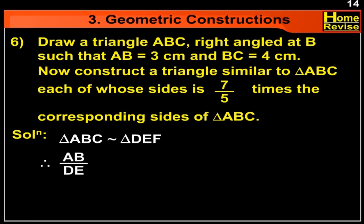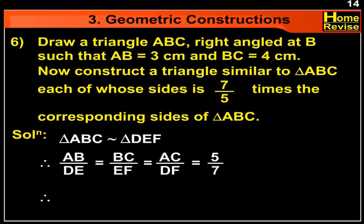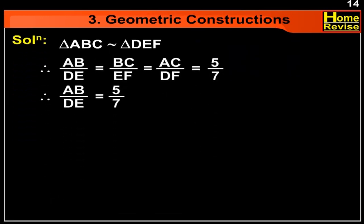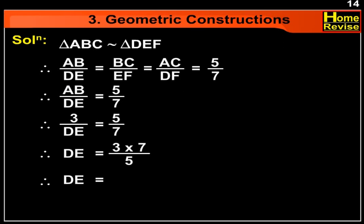Since the new triangle is similar to triangle ABC, AB upon DE is equal to BC upon EF is equal to AC upon DF, which is equal to 5 upon 7. Therefore, AB upon DE is equal to 5 upon 7. Putting the value of AB, we get 3 upon DE is equal to 5 upon 7. Therefore, DE is equal to 21 upon 5, which equals 4.2 cm.